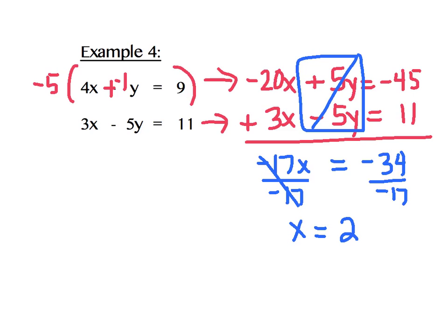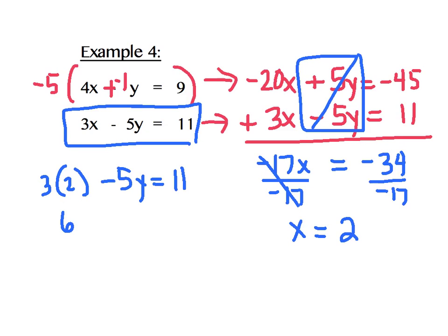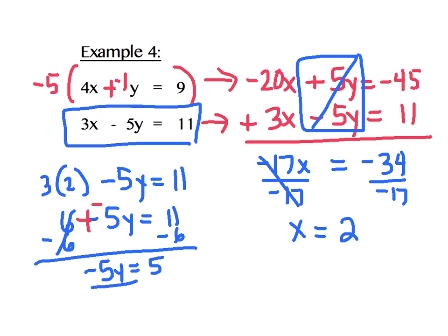I'm going to take that and substitute it back into this second equation here. 3 times my x value minus 5y equals 11. 6 minus 5y equals 11. And I'm going to subtract 6 on both sides. Now, reminder, some of us might need to change that to plus negative 5y to make sure we're doing the correct inverse operation. That's going to give me negative 5y equals 5. And when I divide both sides by negative 5, I get y equals negative 1. I'm going to go ahead and write my solution as an ordered pair. And I get 2 negative 1.